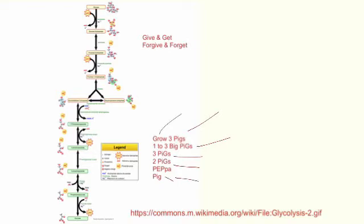So grow three pigs is glyceraldehyde-3-phosphate. One to three big pigs is 1,3-bisphosphoglycerate. Three pigs is 3-phosphoglycerate, 2-phosphoglycerate, and then PEP is phosphoenolpyruvate and pyruvate.